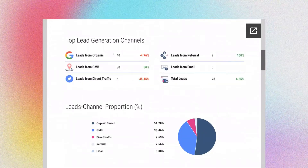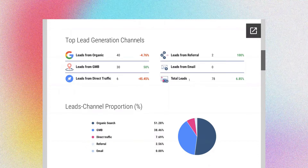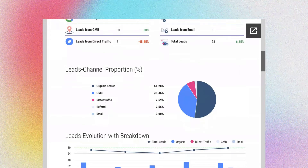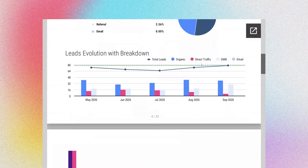Then you can look at the top lead generation channel. Is it your organic — not so much branded terms, but 'estate agents in area' or 'property for sale in area' kind of search terms? Or is it Google My Business, which is a killer channel that we massively promote? Or are they direct leads? You've got your referrals, and in this case we're not running email, hence the zero. But you can clearly see where the proportion of the leads are coming from.